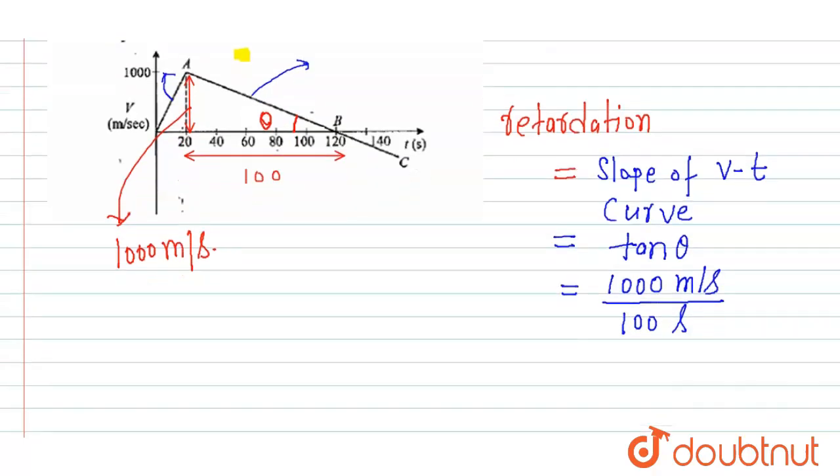So it will be 10 meter per second square. Hence retardation is 10 meter per second square, or we can say acceleration is minus 10 meter per second square.